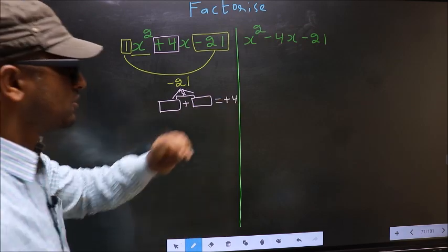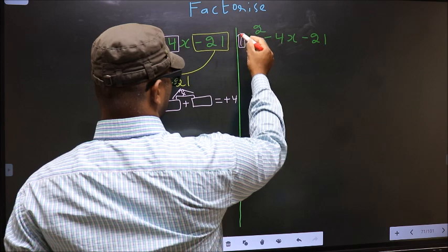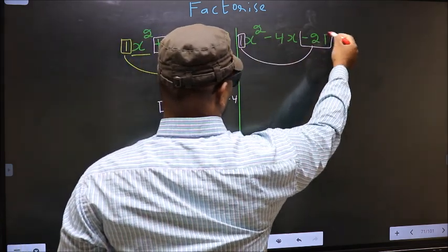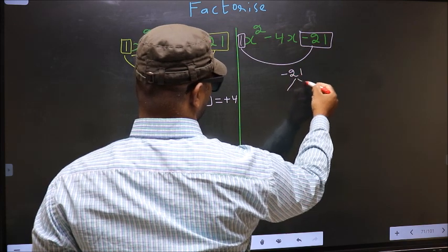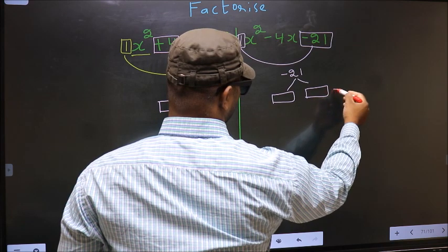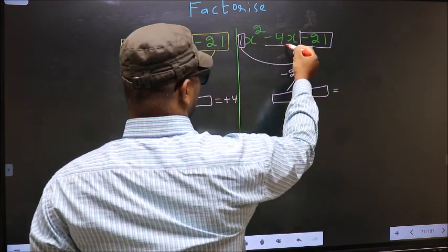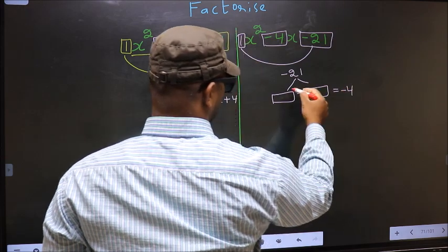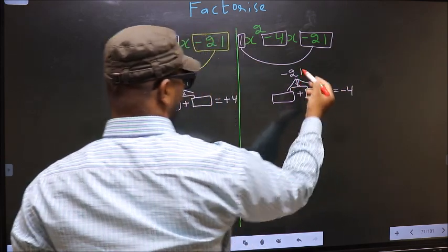Over here also the same: coefficient of x² is 1, multiply it to the constant -21, so 1 × (-21) = -21. Now look out for two numbers such that when you add them you get the middle coefficient -4, and also when multiplied you get -21.